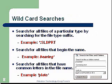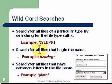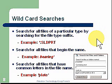Wildcard searches — search for all files of a particular type by searching for the file type suffix. Here's an example using the asterisk — this is your wildcard. Type in asterisk dot SLDPRT for your SolidWorks part and search for that. You'll find everything that has SLDPRT as the file extension.